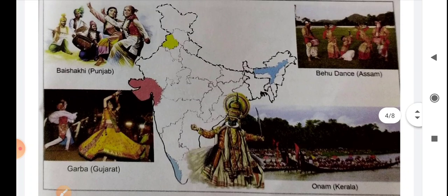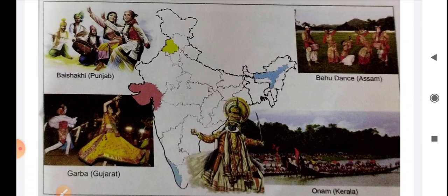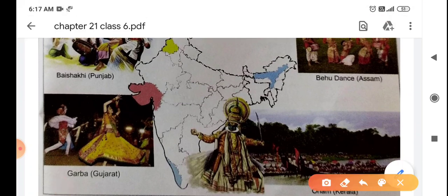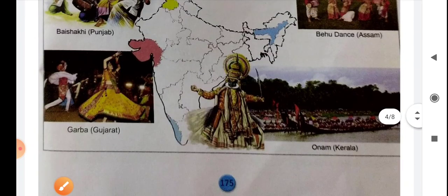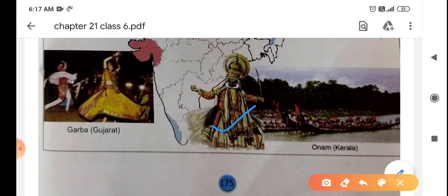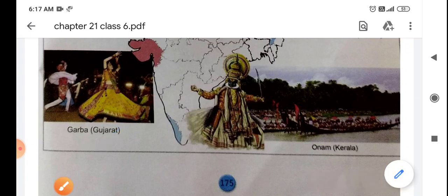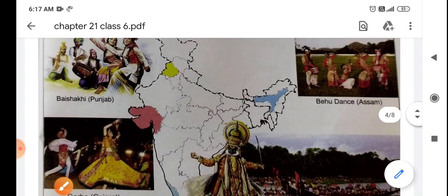Respect and faith in this diversity has kept India united and integrated. یہاں آپ dance forms اور different celebrations دیکھ سکتے ہیں - the people of Punjab doing Bhangra، the Bihu dance، Kathakali، Garba، اور Onam celebration۔ تو یہ سب ہماری diversity کے ساتھ ہماری country کی unity کو بھی show کرتے ہیں۔